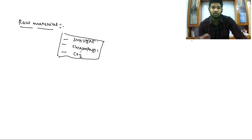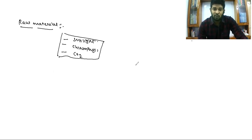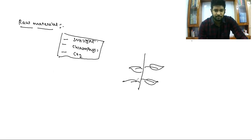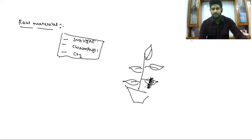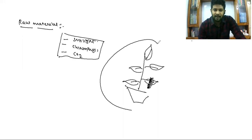In order to prove this, we have to conduct an experiment. For this experiment, we have to take a well-matured watered plant. We have to select a leaf and cover half of the portion with black paper, and we have to keep this setup in sunlight.